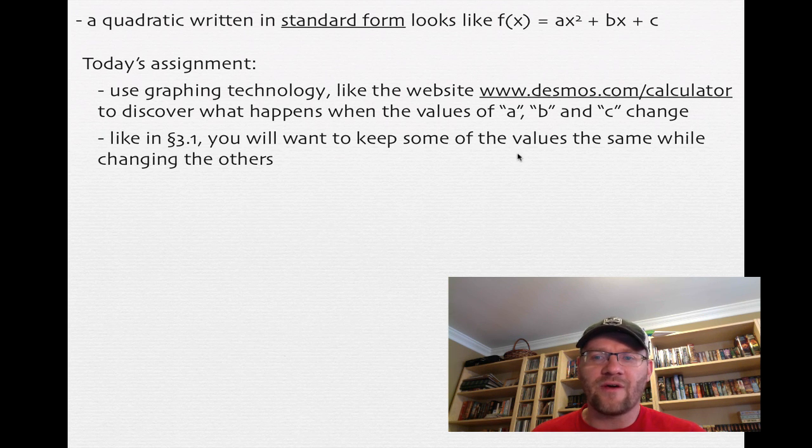And like in 3.1, you'll want to keep some of the values the same while changing the others. So you don't always want to change the value of a and b at the same time. You want to keep a constant, change b a few times, see what happens, and then change c a few times, see what happens.